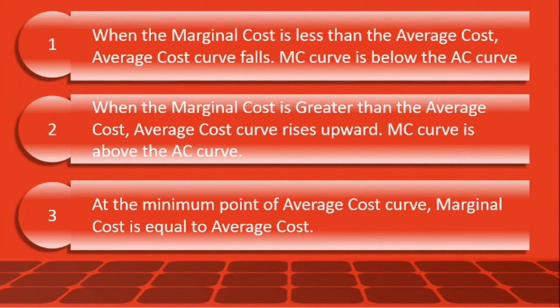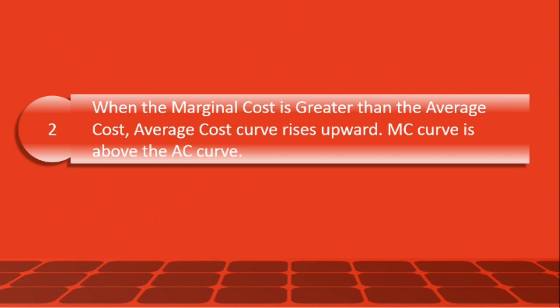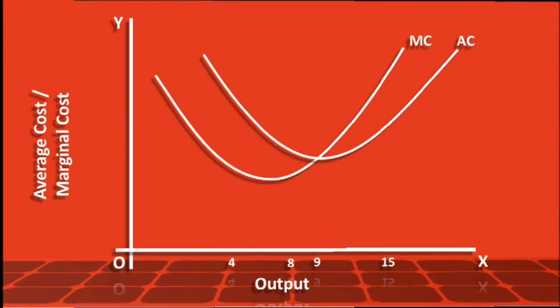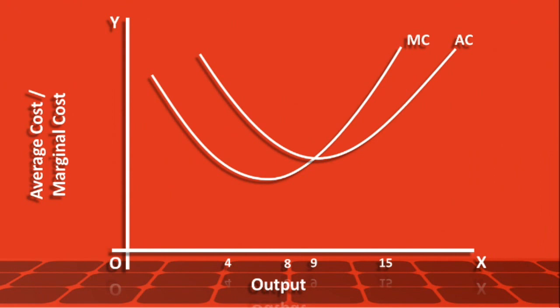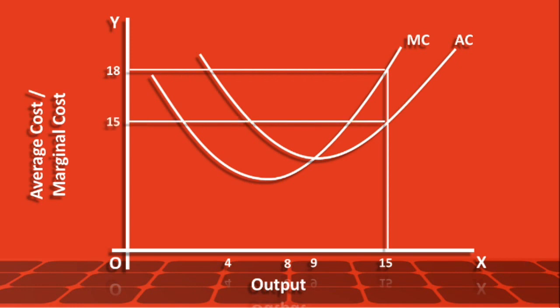The second relation is when marginal cost is greater than average cost, the average cost curve rises upward. To understand this, let us take the output of 15 units. Marginal cost is 18 rupees and average cost is 15 rupees. Since marginal cost is greater than the average cost, average cost is on the increase, and the marginal cost curve lies above the average cost curve.